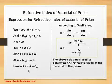This is half the sum of the angle of the prism and the angle of minimum deviation. Using Snell's law, we have μ (the refractive index of the material of the prism) equals sin i / sin r. Replacing the values of i and r from these equations, we get μ = sin[(A + δₘ)/2] / sin(A/2). This relation for μ is very important.